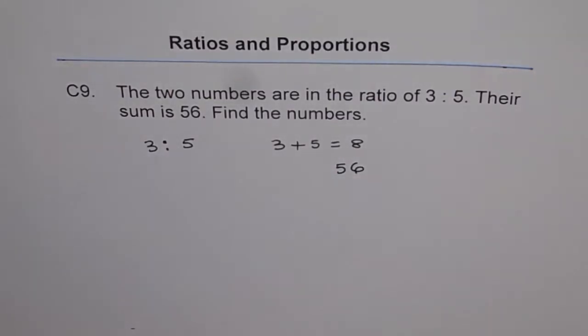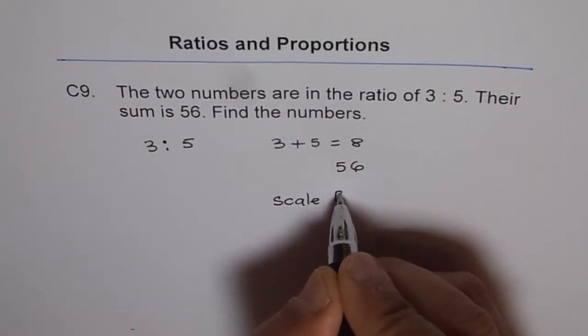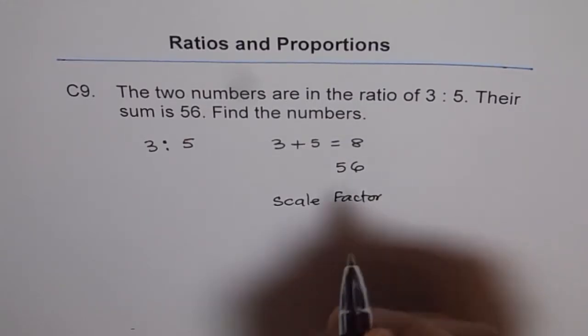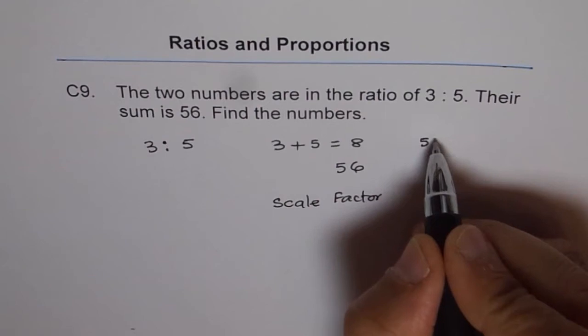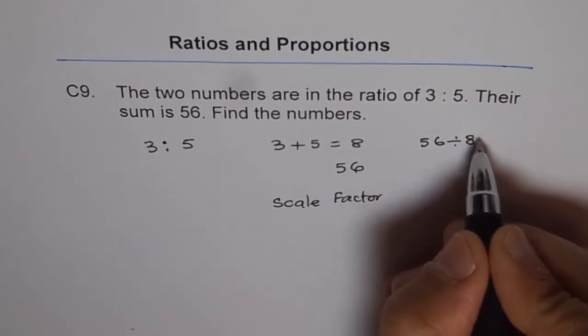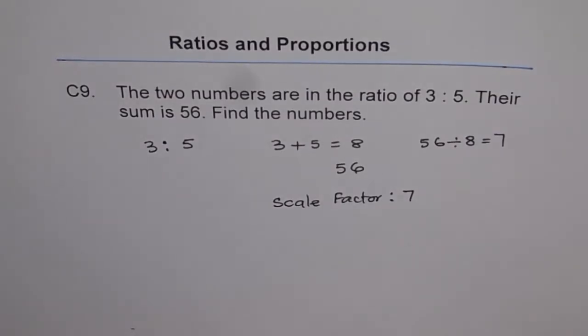So if the sum is 56, then we find what is the scale factor. So scale factor is 8 times what is 56. You can do 56 divide by 8 and you know it is 7. So the scale factor is 7. 7 times 8 is 56.